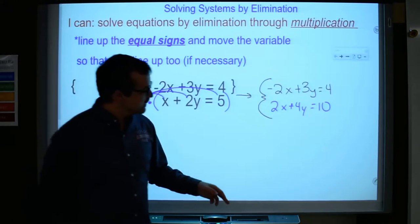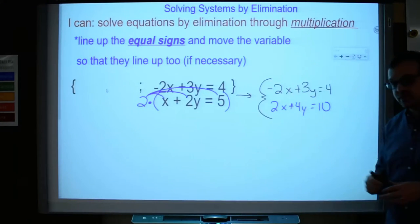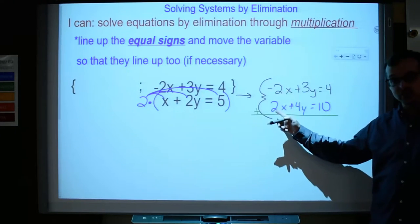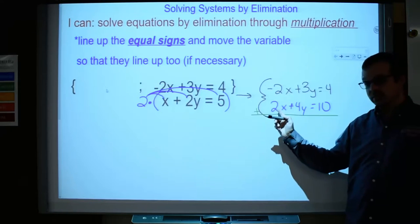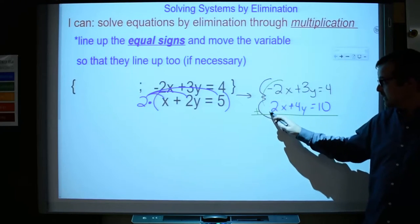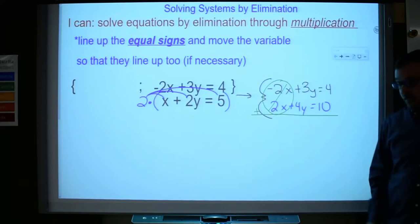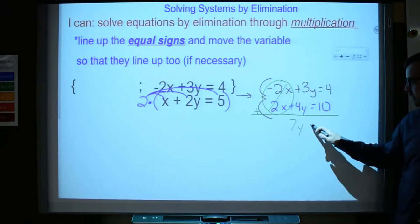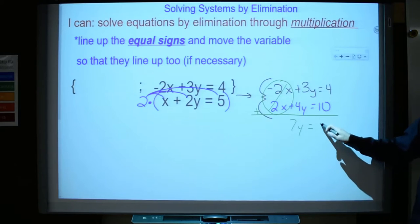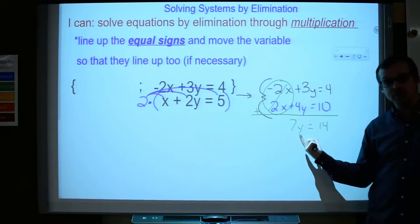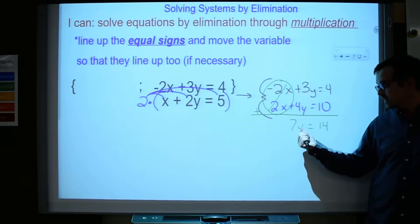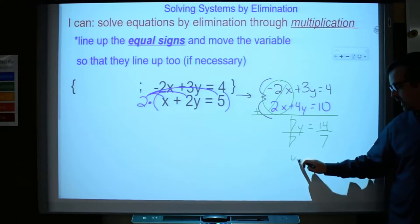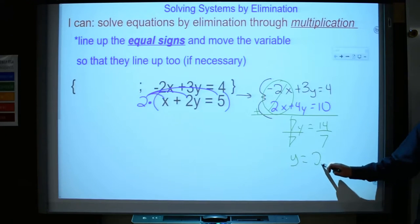What's great about this is now I have two equations that I can add and actually eliminate a variable. So I got negative 2x plus 2x. We talked about that just a second ago. That cancels out to 0. 3y plus 4y is 7y, and 4 plus 10 is 14. Now I can keep on solving this one because I only have one variable left. So I can actually solve this for y by dividing both sides by 7. So y equals 14 divided by 7, which is 2.